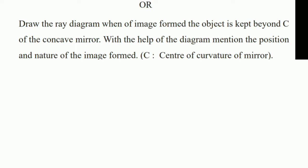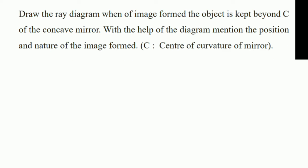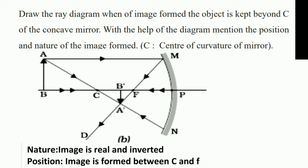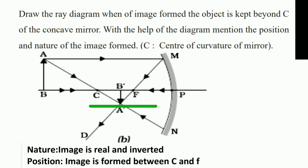Internal choice question: draw the ray diagram when the object is kept beyond C of the concave mirror. C is the center of curvature of the mirror. The nature of the image is real and inverted, as you can observe in the diagram. The position of the image is between C and F.